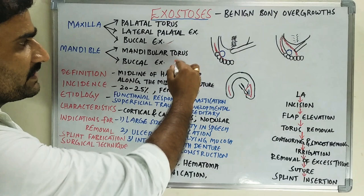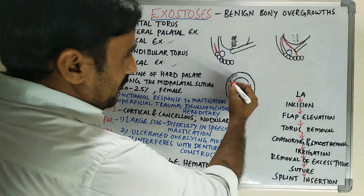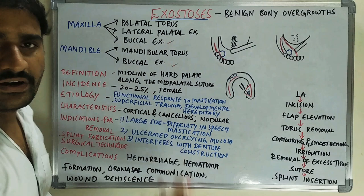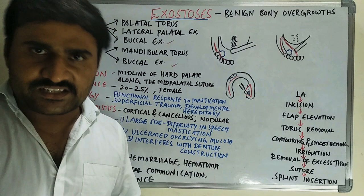For buccal exostoses, whether in the maxilla or mandible, the exostoses are on the buccal aspect of the alveolar process. Make an incision along the crest of the alveolar ridge, elevate a mucoperiosteal flap, and remove the bone. If necessary, you can also take releasing incisions.